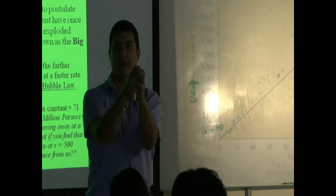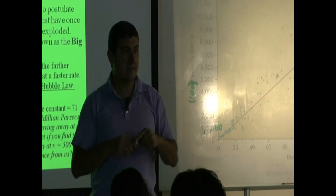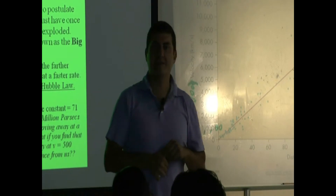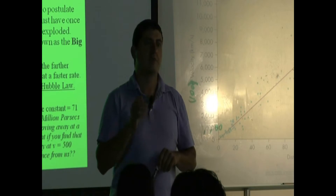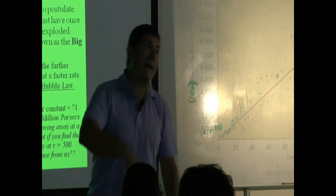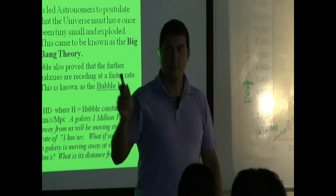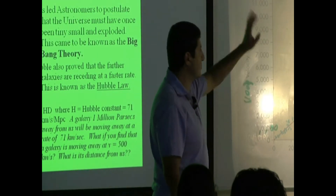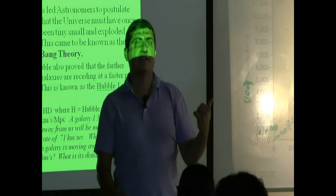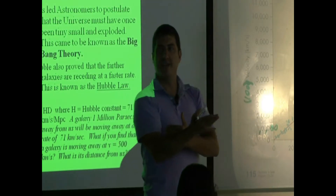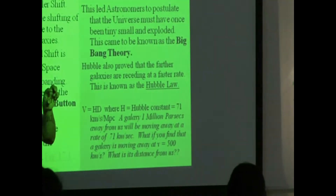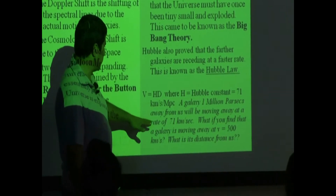Early data with H around 90–100 gave a universe age of only 5–6 billion years. The problem was we were discovering galaxies 8–9 billion years old, which is a contradiction. So we went back to the data and said the Hubble constant couldn't be that high. More measurements and refinements showed H must be smaller — a smaller H inverted gives a larger age of the universe.